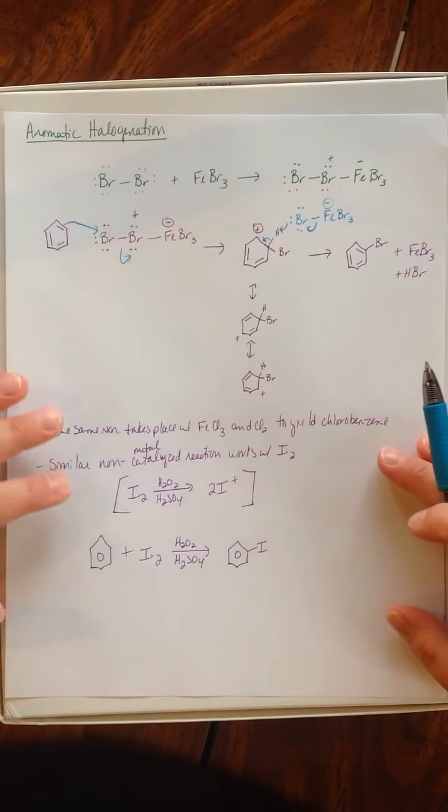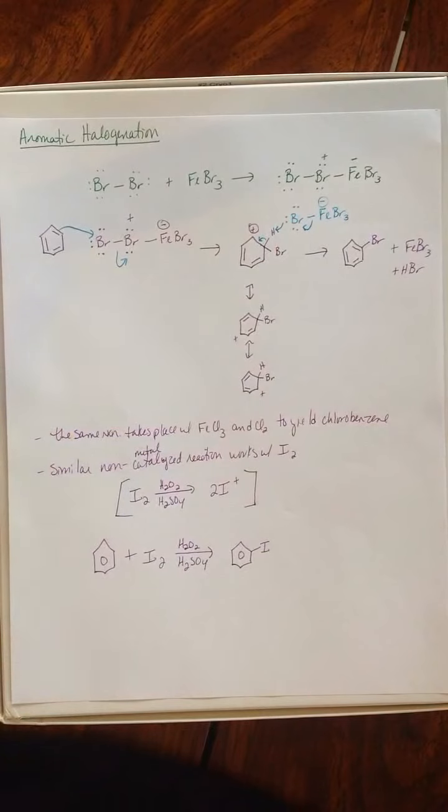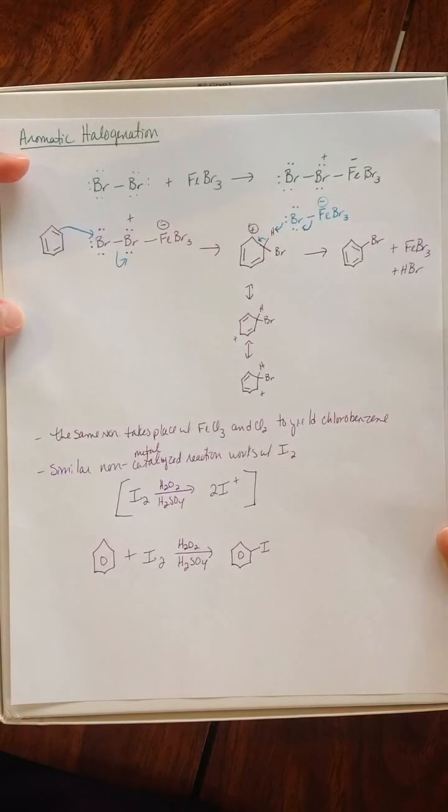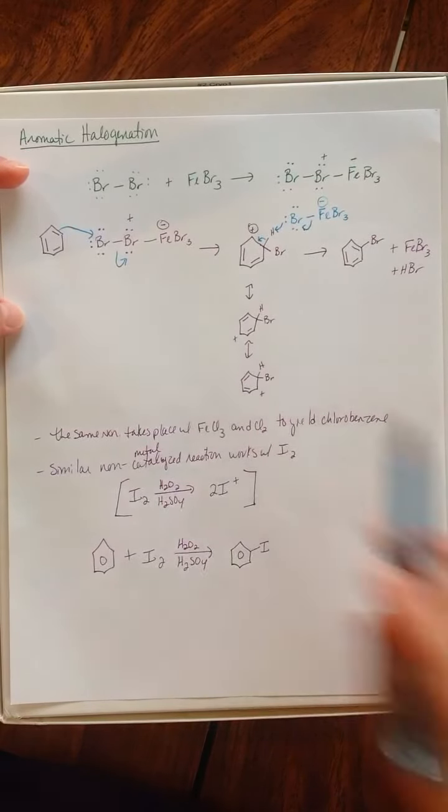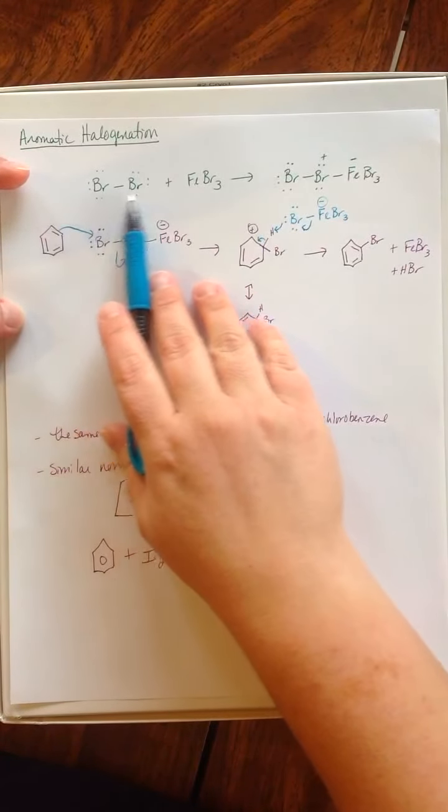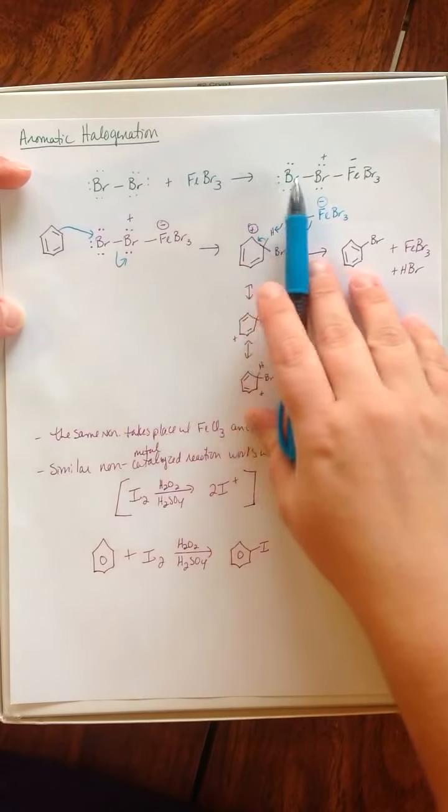So for our first mechanism, let's look at how bromine, in the presence of FeBr3 as a catalyst, reacts with benzene. The first thing that happens is that the bromine and FeBr3 kind of huddle up here...